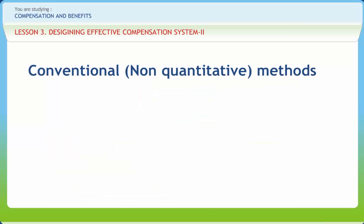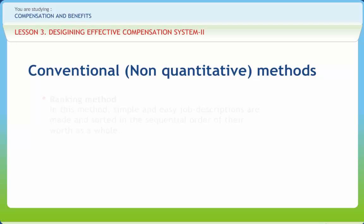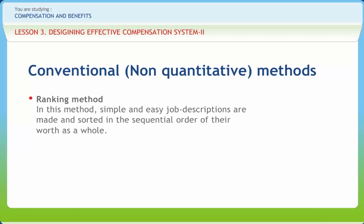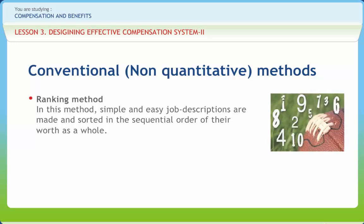Conventional non-quantitative methods are divided into two. First is the ranking method and second is the classification method. In the ranking method, simple and easy job descriptions are made and sorted in the sequential order of their worth as a whole. Ranking of all the jobs is made easier by first identifying those that come at two extreme ends of the scale and locating the rest in the middle region. A committee carries out this ranking more than once and the results of repeated ranking are pooled to arrive at the final ranking.